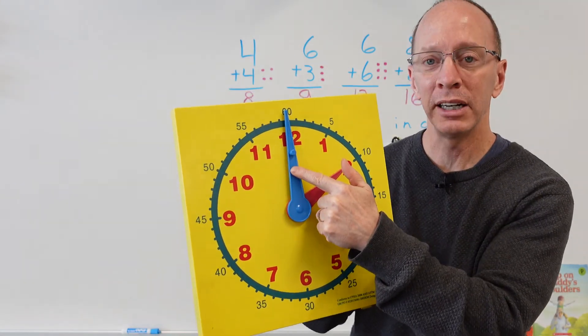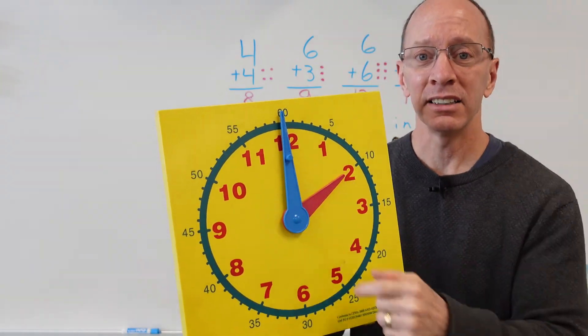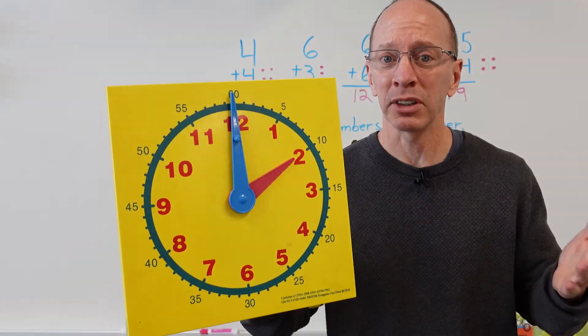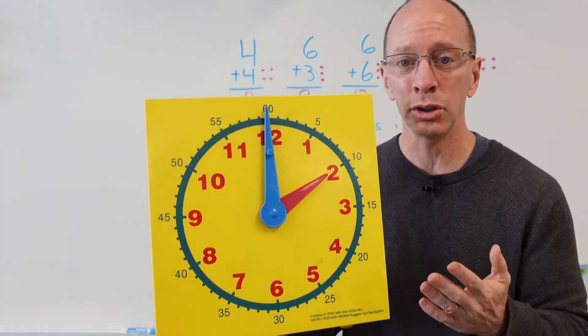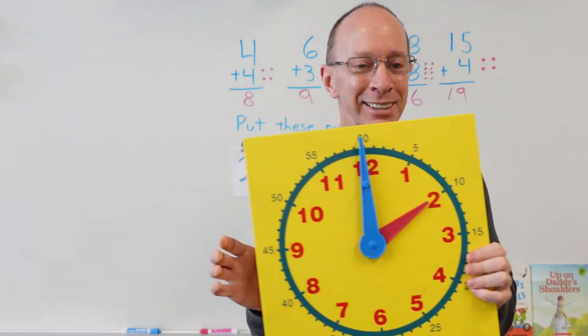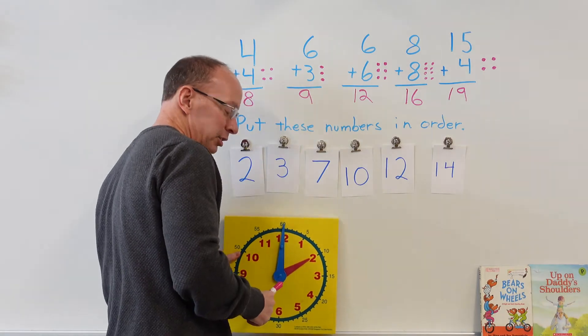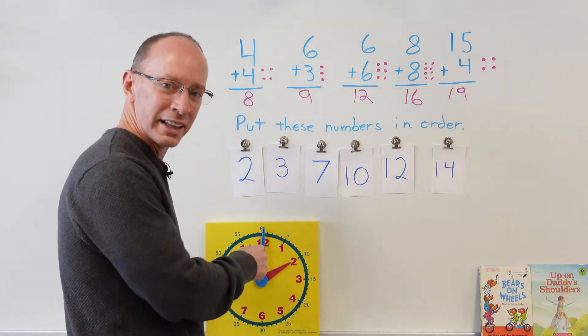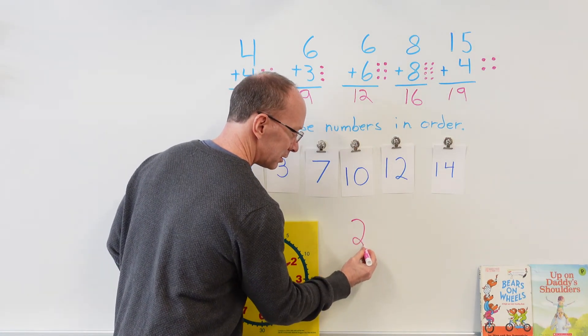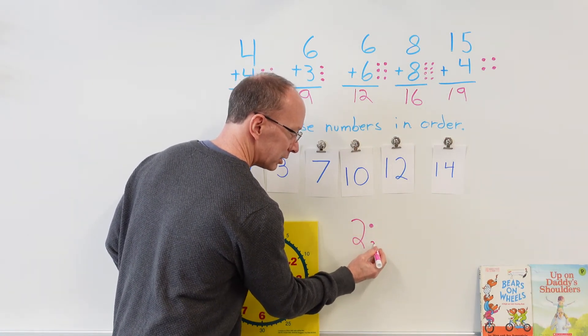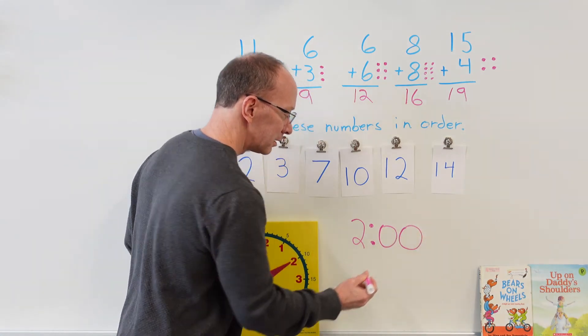So right now we'd say that the big hand is pointing to the top, so it's something o'clock, and the hour hand is pointing to the two. So it is two o'clock. It's my snack time! So right now I'm going to go ahead and write two o'clock. All right, hoping that that's not going to fall over. So we write two o'clock like this: two, and with two little dots like that. All right, just like that—two o'clock. All right, time for my cookie break, isn't it?